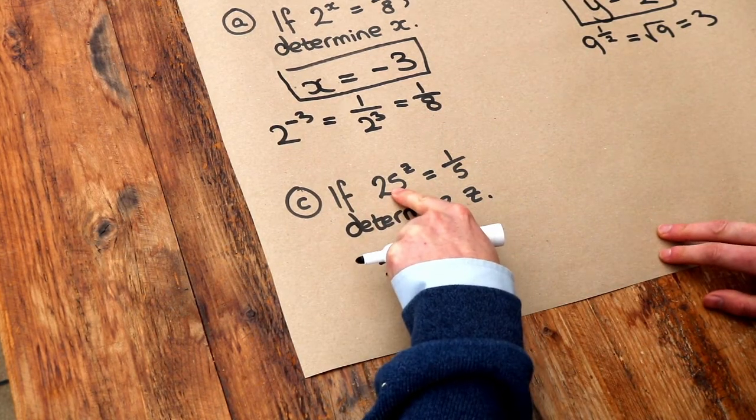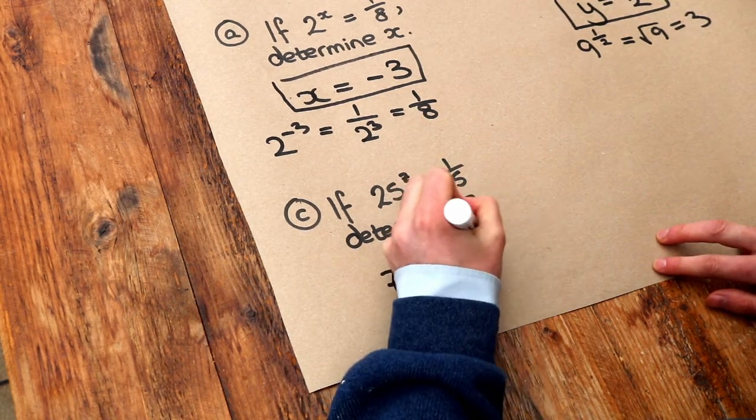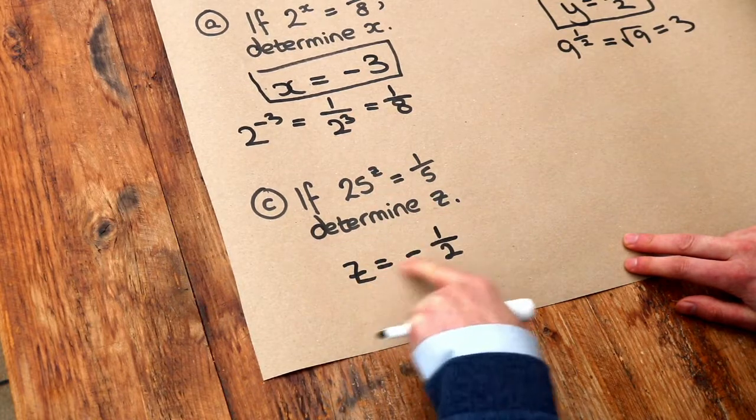And the 25 seems to be square rooted to have got that 5. And that's caused by a power of a half, because anything to the power of half square roots it. So the z here, the unknown power, is minus half.